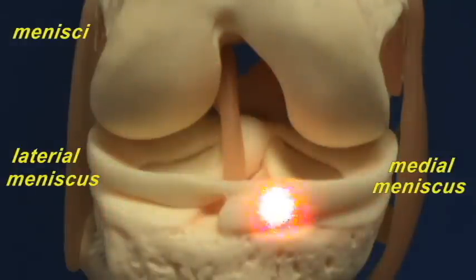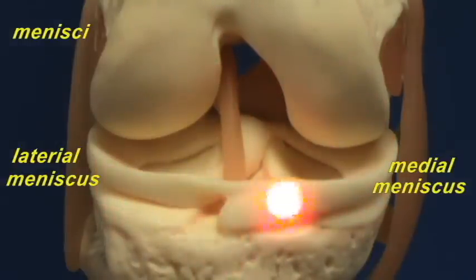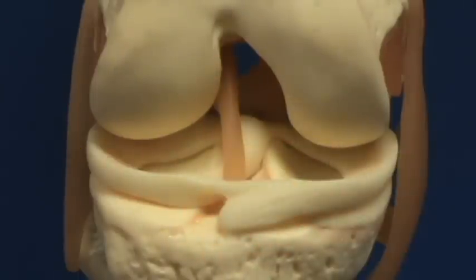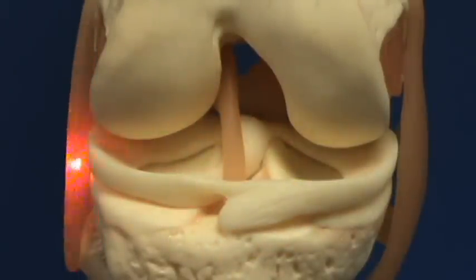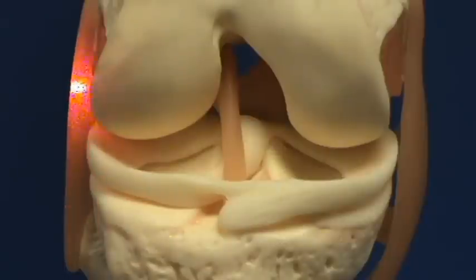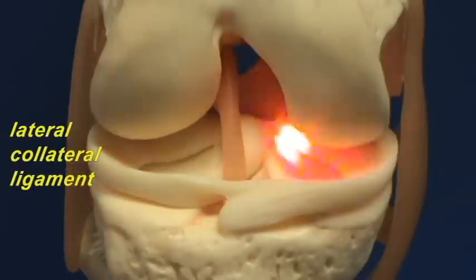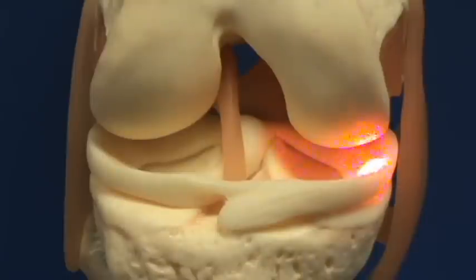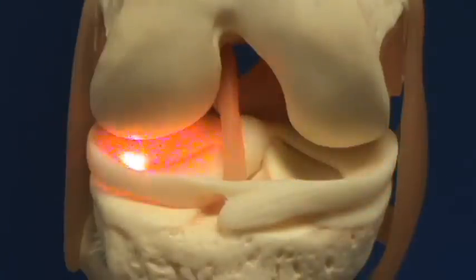The menisci are held in position by ligaments, which you can see over here as an example. And again, for orientation purposes, this would be our lateral collateral ligament on the lateral side, and here is our medial collateral ligament on the medial side. So this would be the medial meniscus and this would be the lateral meniscus.